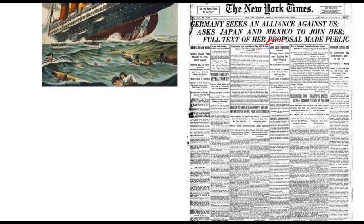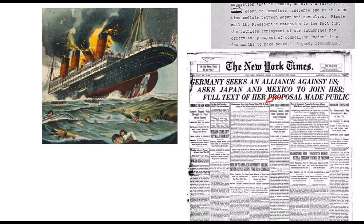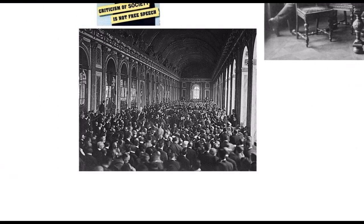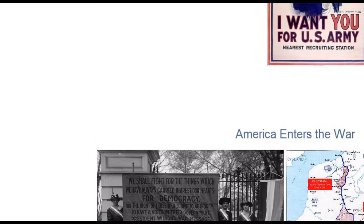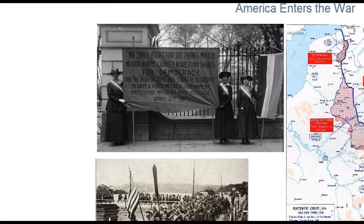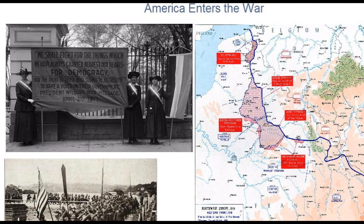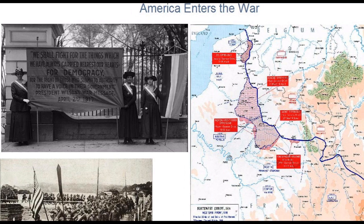Germany also resumed submarine warfare, and once again in 1917 American ships were being threatened and sunk. As a result of this, President Woodrow Wilson finally decided in April of 1917 that the U.S. could no longer remain neutral and that the United States needed to enter the war and take a firm stand against Germany. Wilson decided that Germany represented the greatest threat and that America had to join England and France in the war against Germany.